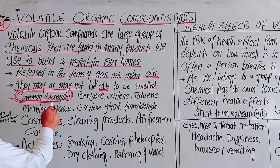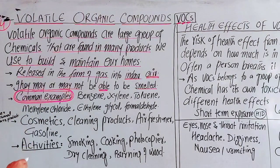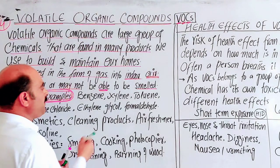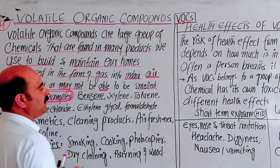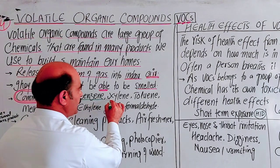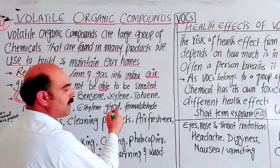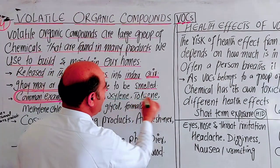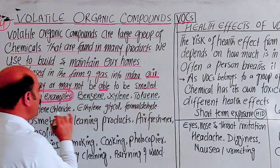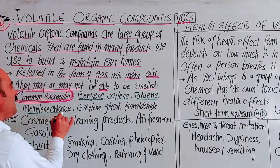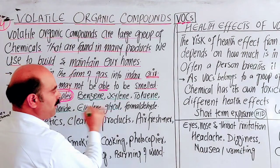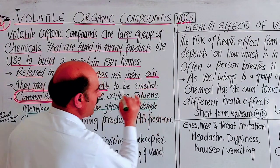Common examples of volatile organic compounds released from household products include: benzene, which is a volatile organic compound; xylene, which has a hydrocarbon structure; toluene; methylene chloride; ethylene glycol; and formaldehyde.